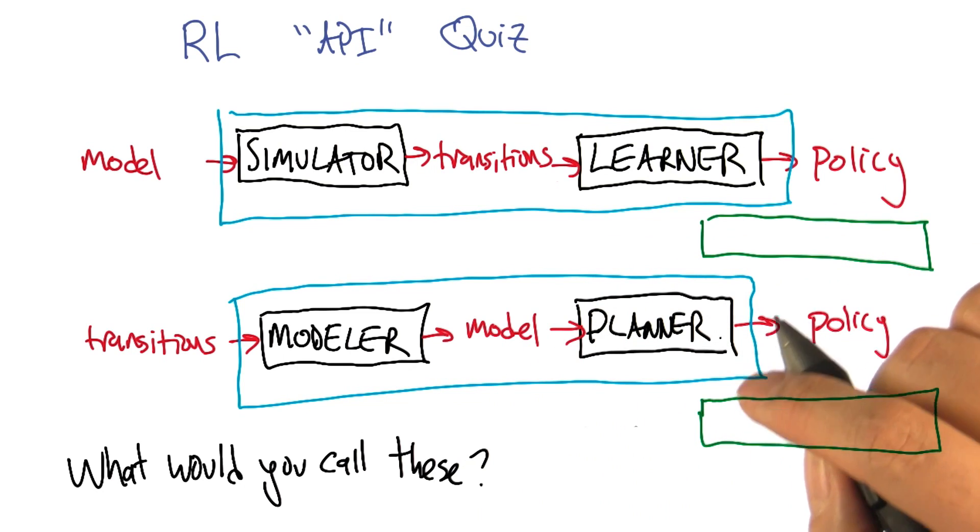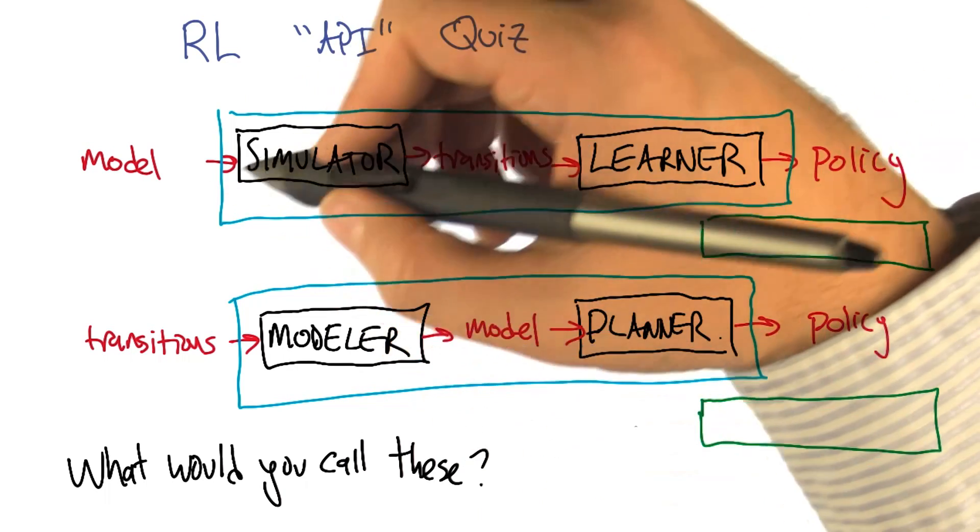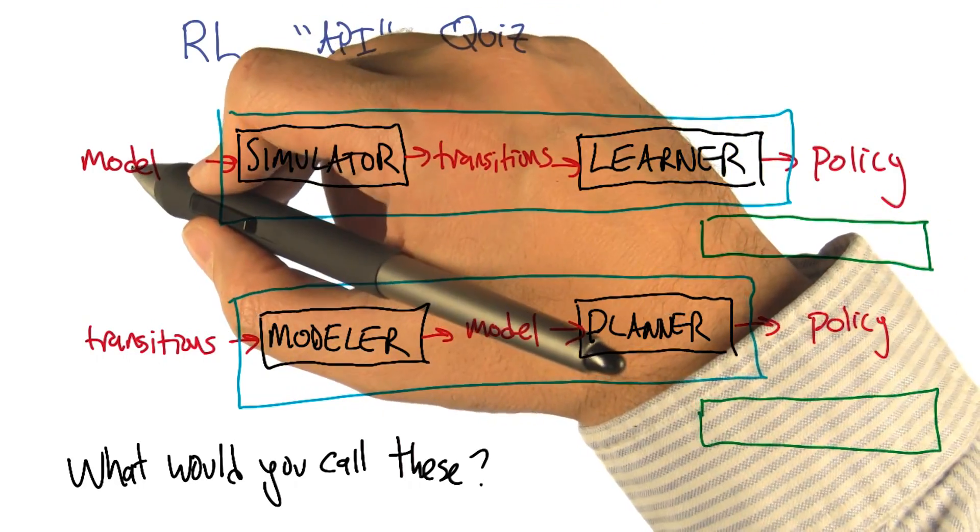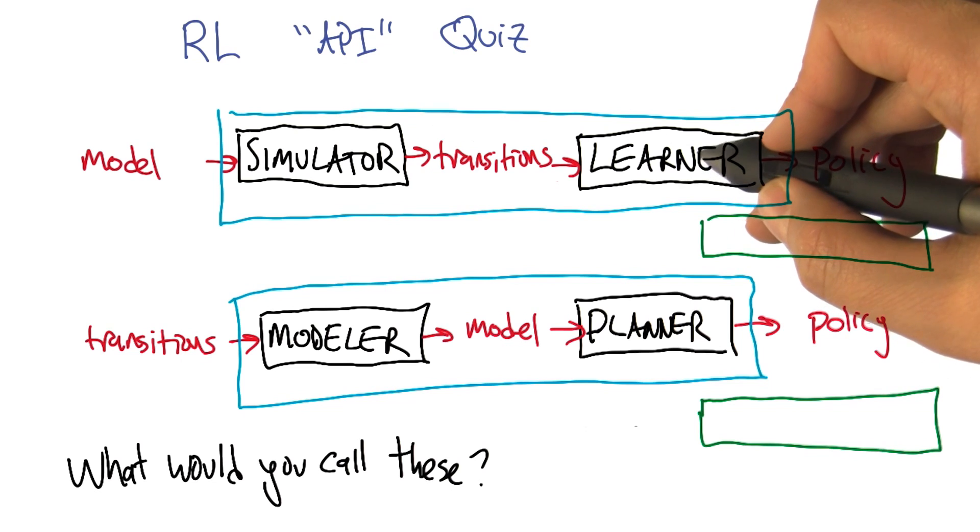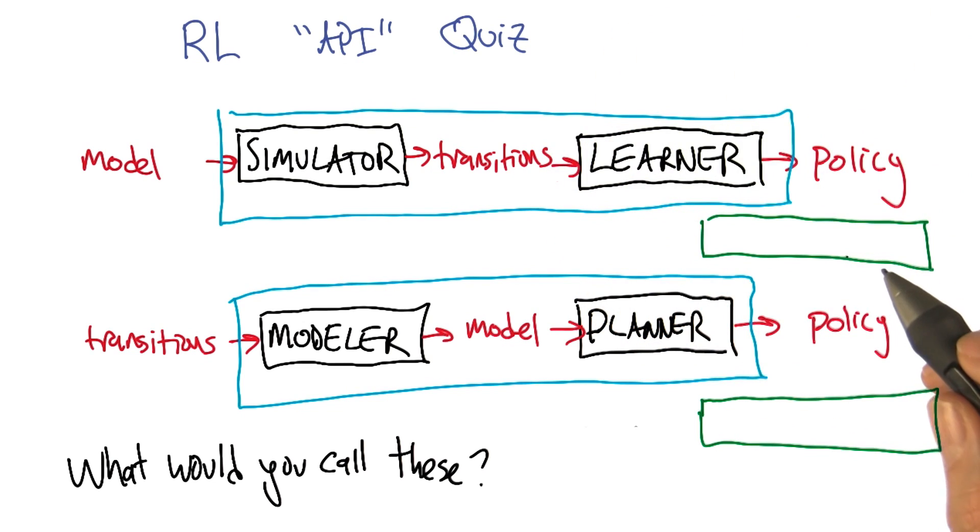But let's contrast it with the opposite idea, which is we can also map a model through a simulator into transitions. And then if we have the ability to do reinforcement learning, we can turn those transitions into a policy.